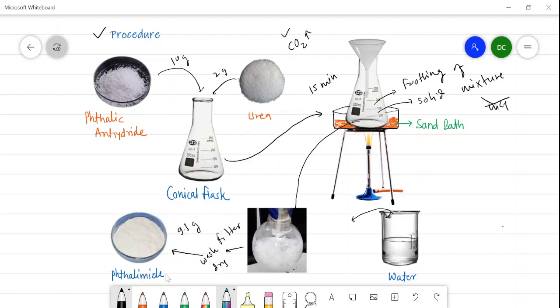Now this crude product, it is nothing but phthalimide, but it is then recrystallized from ethanol, and after recrystallization the pure product which is obtained is subjected to melting point. Now we can measure the melting point of this recrystallized product and it is found to be 238 degrees Celsius. So in this way we can obtain crude product as well as recrystallized product and the melting point of this product.